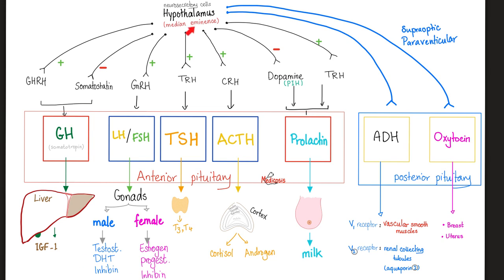What does inhibin do? It inhibits. Hypothalamus secretes TRH, which goes to the anterior pituitary to secrete TSH, which goes to the thyroid to secrete thyroid hormone T3 and T4. Hypothalamus secretes CRH, which goes to the anterior pituitary to secrete ACTH, which goes to the adrenal cortex — not medulla, cortex — to secrete cortisol and androgen. Hypothalamus also secretes TRH to stimulate prolactin secretion from the anterior pituitary to produce milk. Hypothalamus secretes ADH and oxytocin, stored in the posterior pituitary. ADH preserves water and raises blood pressure. Oxytocin stimulates the breast and uterus — it helps push the baby out and then push milk out.